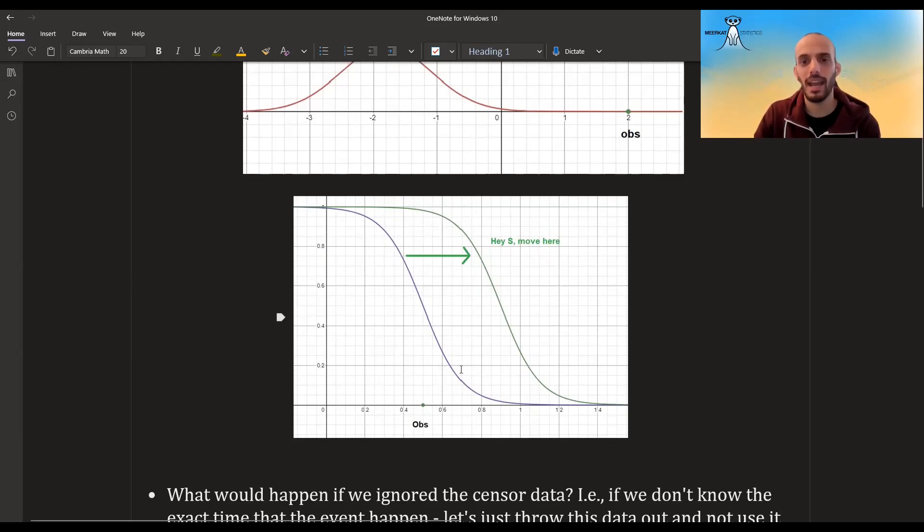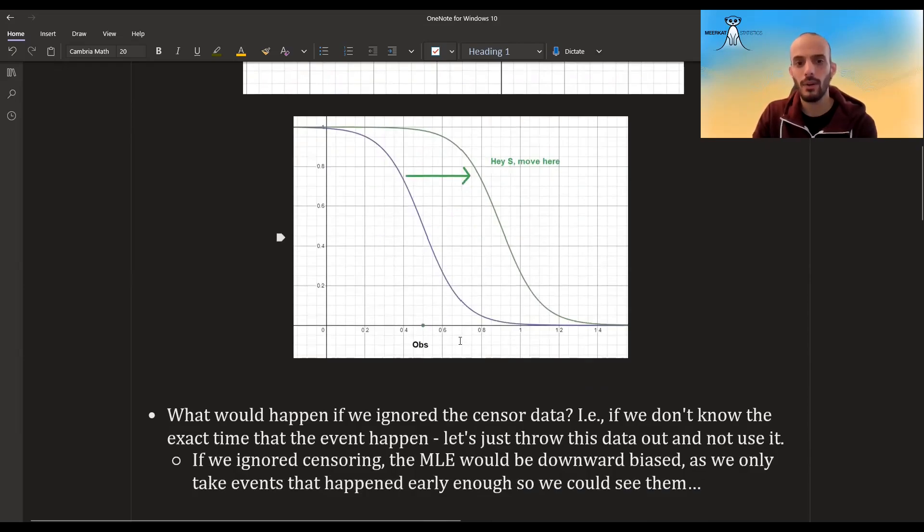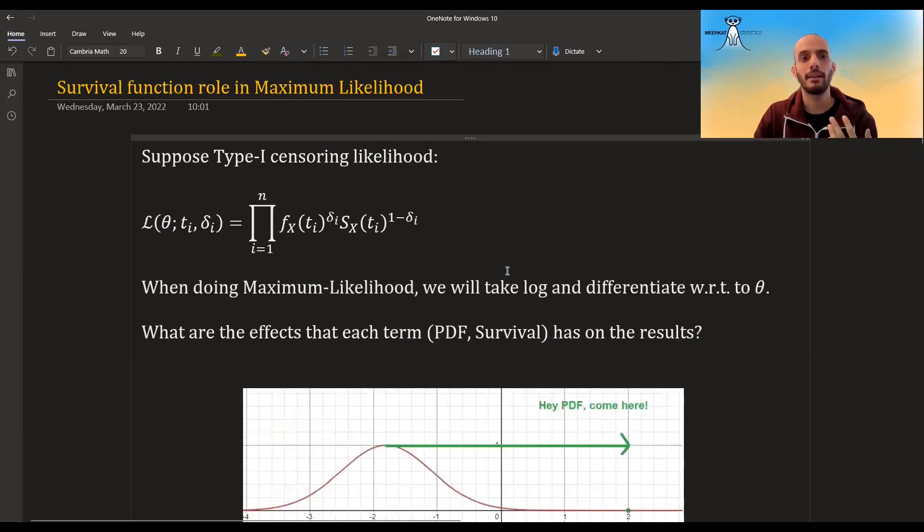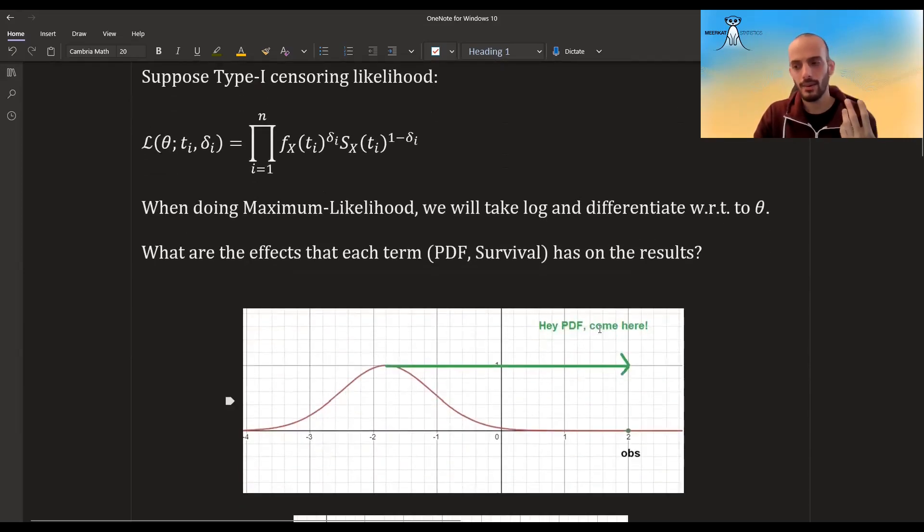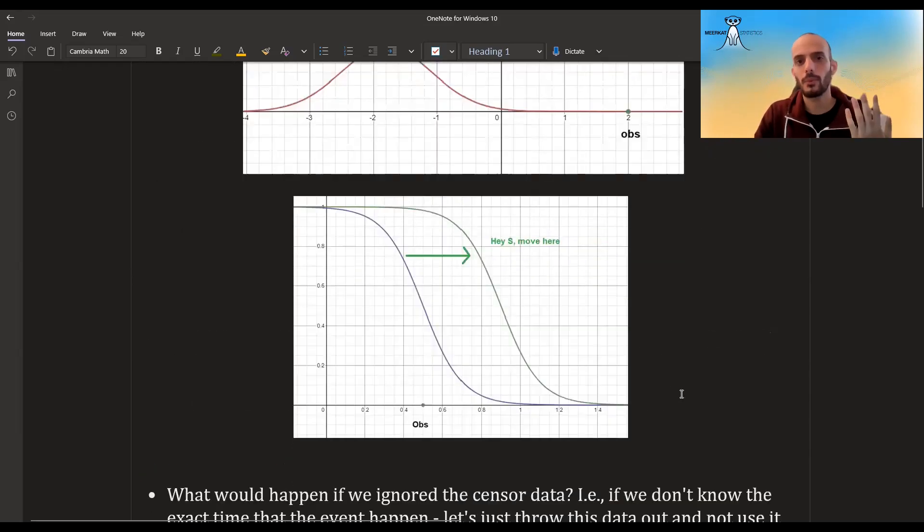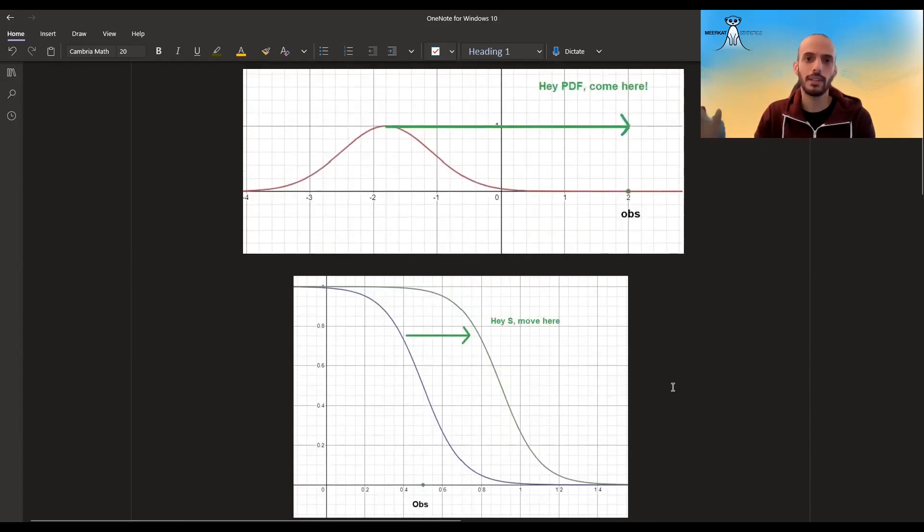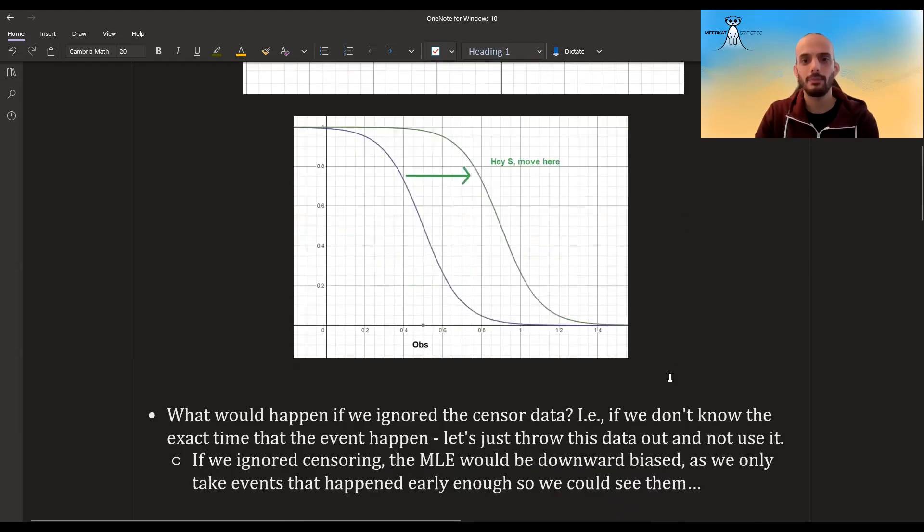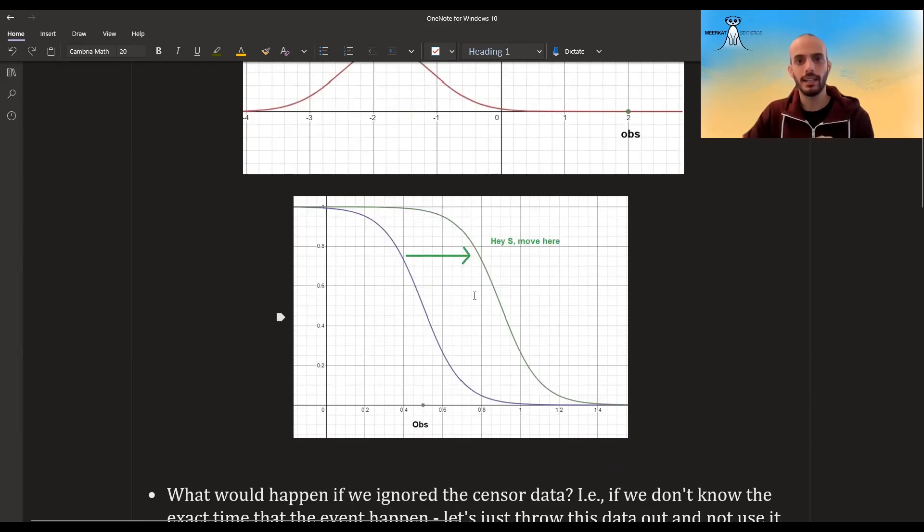Now, a question could be asked, what would have happened if we just ignored the censored data? So remember, the main problem in survival analysis is that there is censoring. We don't always see the times on all of our data. Some data points, we only know that they survived until a certain time, and then we don't know what happened after. We don't know when the event happened to them.